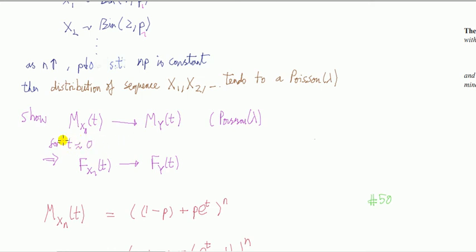And this is for the satisfying condition that these MGFs exist for t around 0. Because then the theorem says that will imply that the CDF of these individual binomials tends to the CDF of a Poisson. And we're done.